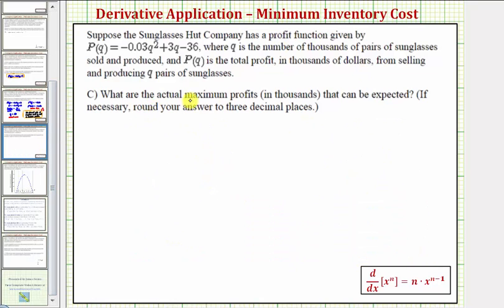And now for part C, we're asked what are the actual maximum profits that can be expected. So to find the actual maximum profits, we want to evaluate the profit function P of Q at Q equals 50. So P of 50 is going to be equal to negative 0.03 times 50 squared plus 3 times 50 minus 36.